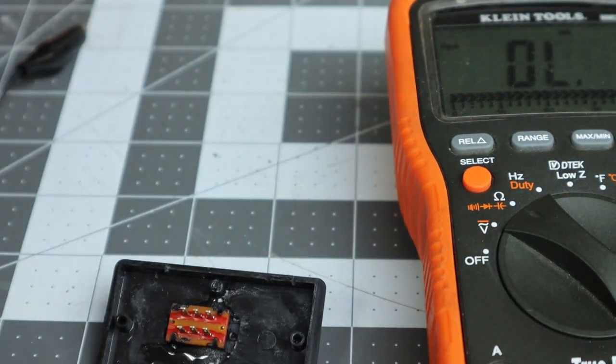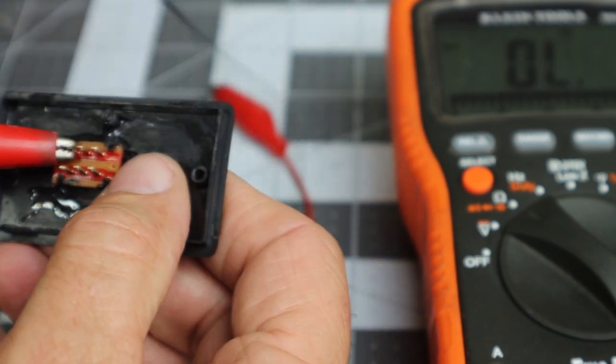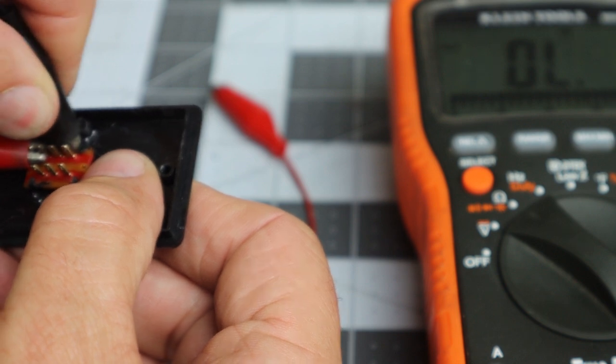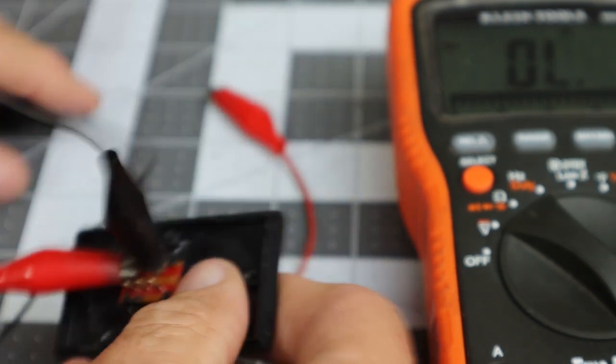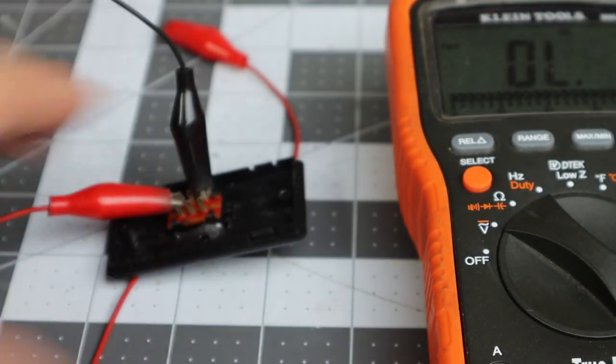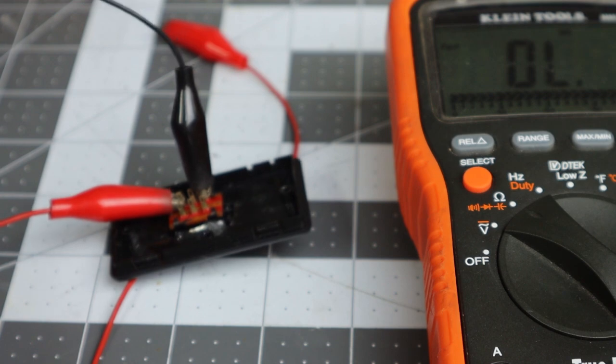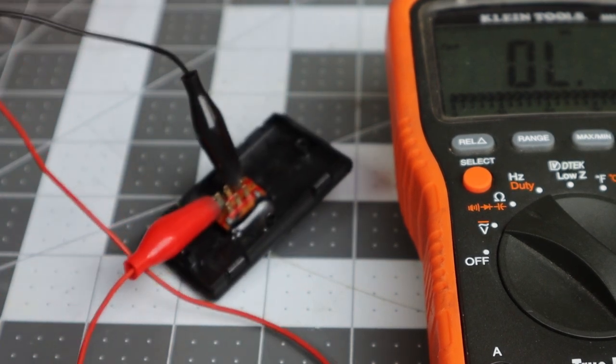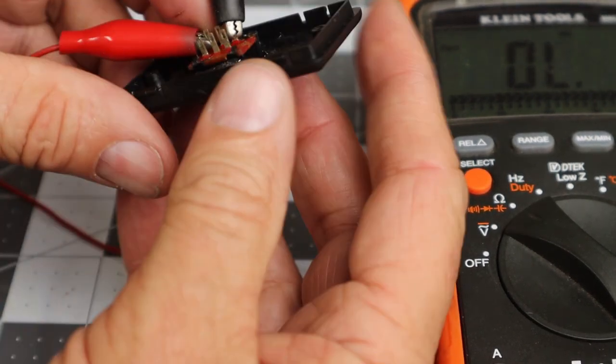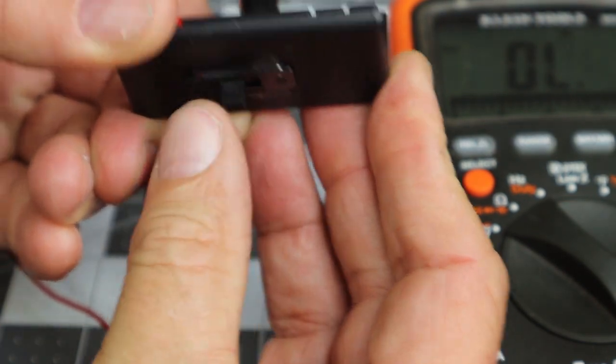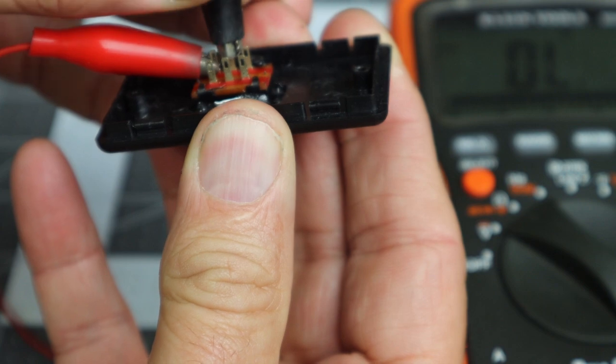We have some alligator clip leads here. We're going to clip on to one pin on one side and clip on another pin on the opposite end. Now we're going to attach the alligator clip to our two meter leads. Now that we have the meter leads connected, we can toggle the switch.